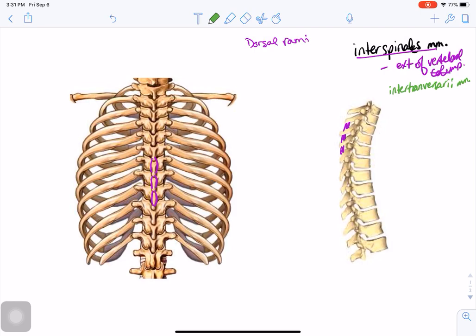Similarly, they're small postural muscles that stabilize adjacent vertebrae and assist with lateral flexion of the vertebral column.